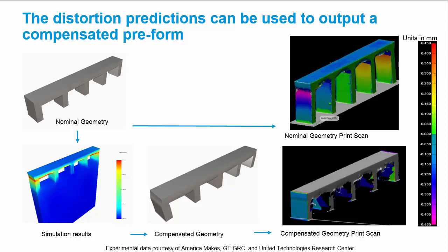You can see in the compensated geometry print scan that the distortion is much reduced in the area of interest. Through an iterative process of adjusting the amount of compensation and re-running the simulation, we can generally reduce the distortion even more.